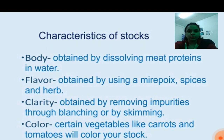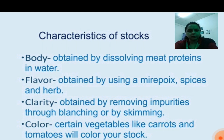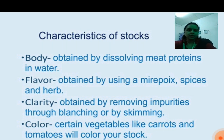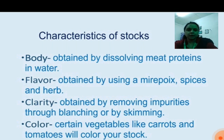The first characteristic is body, which is obtained by dissolving meat proteins in water. The second is flavor, obtained by using a mirepoix and spices and herbs. The third is clarity, obtained by removing impurities through blanching or by skimming.